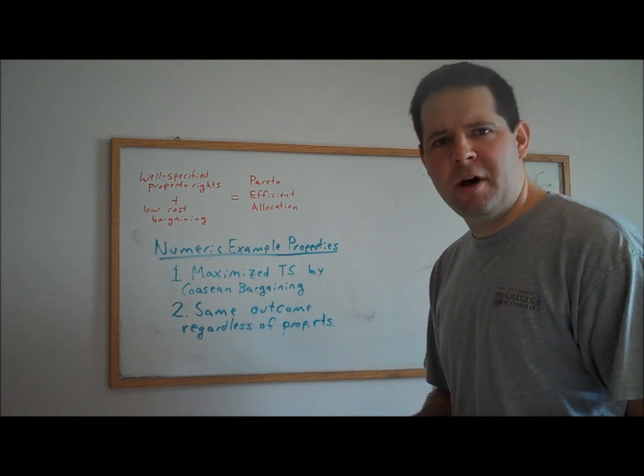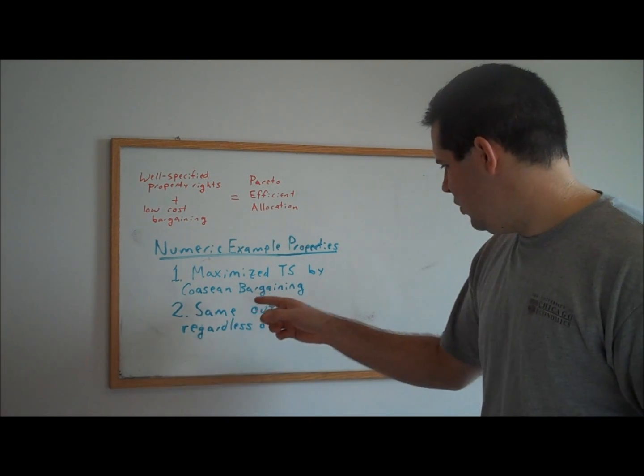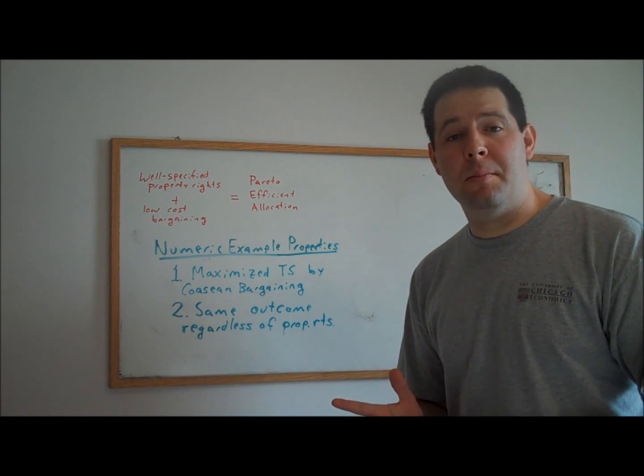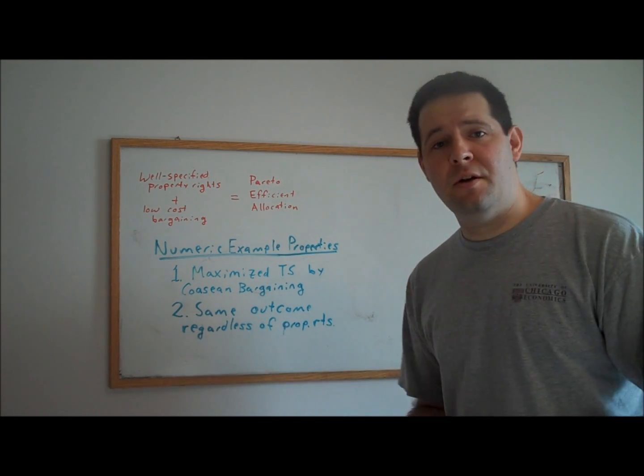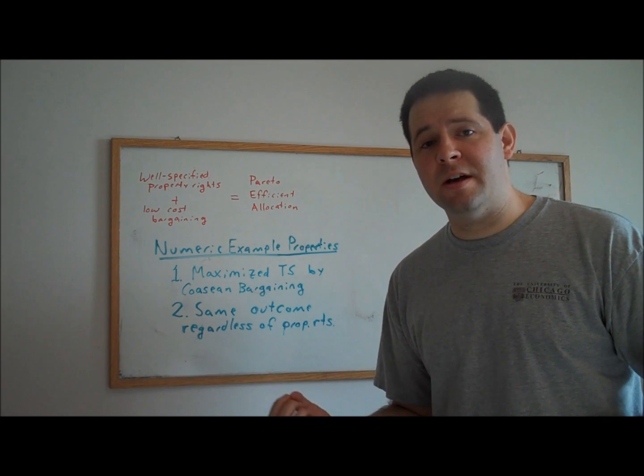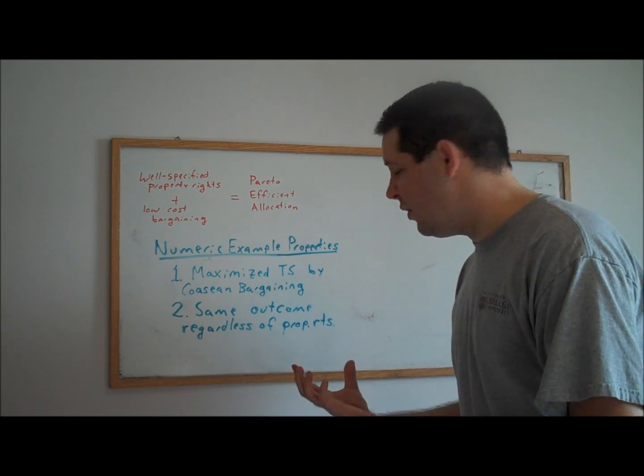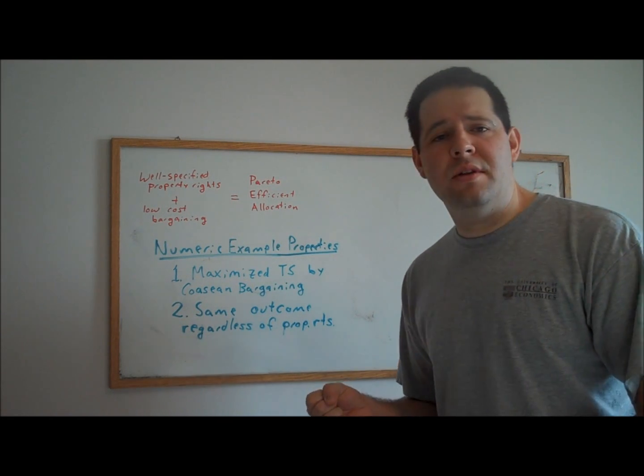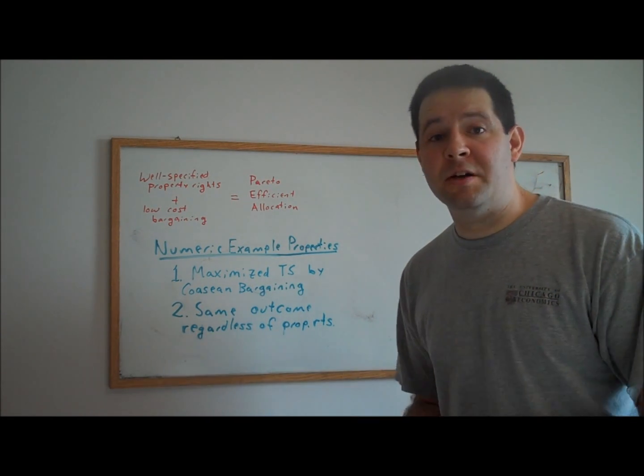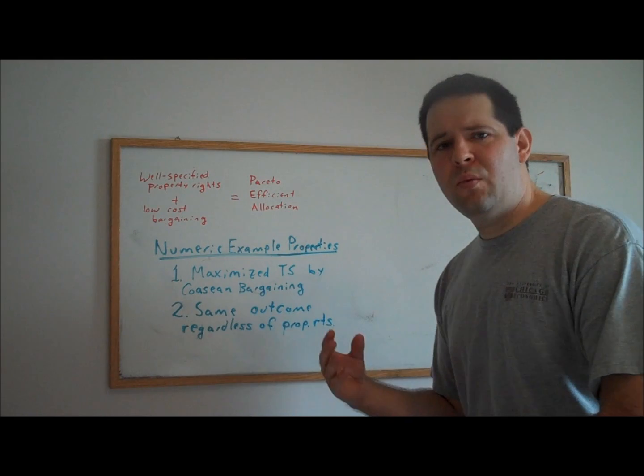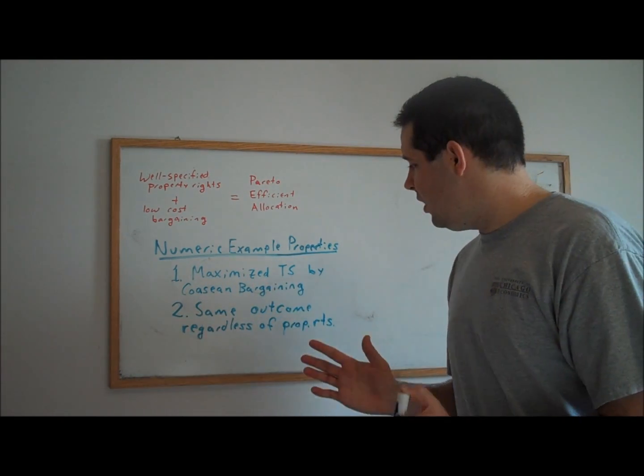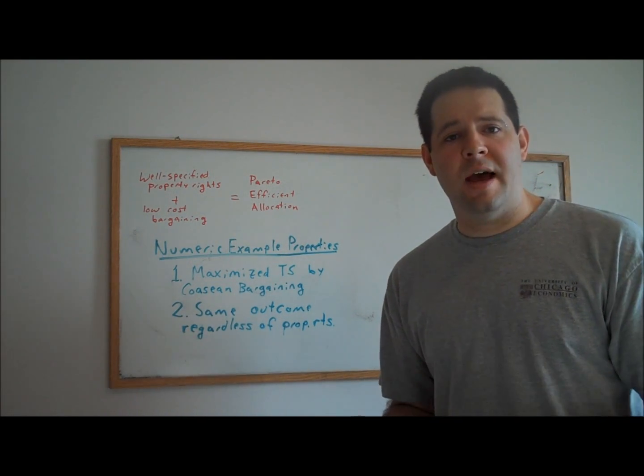The second property, and this one is actually going to have more bite in this video, is that we got the same outcome regardless of who was assigned the property rights. If you go watch that video, you'll see we had a doctor and a confectioner. The confectioner was making noise and the doctor needed silence, and in that case the doctor valued the silence more than the confectioner valued making the noise, so we could assign the property rights to the doctor or to the confectioner, and in either case we would end up with silence.